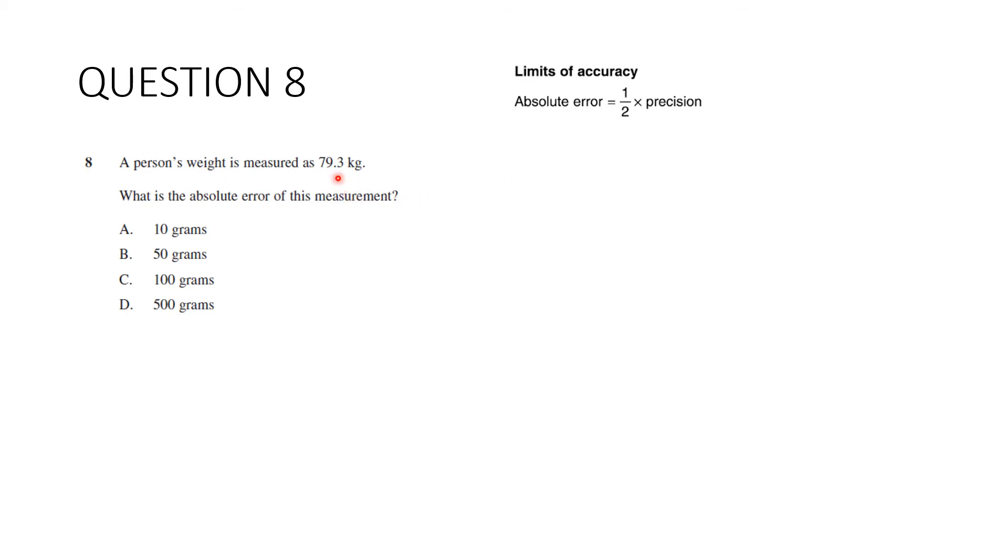So the precision is 0.1. It's the smallest unit you can put in that position. So our absolute error is 0.5 or a half multiplied by 0.1, the smallest unit. It's in kilograms. Let's multiply that out. It gives us 0.05 of the kilogram, but there's an added complication. We want it in grams. So let's multiply that by a thousand. It gives us 50 grams, which is the answer B.